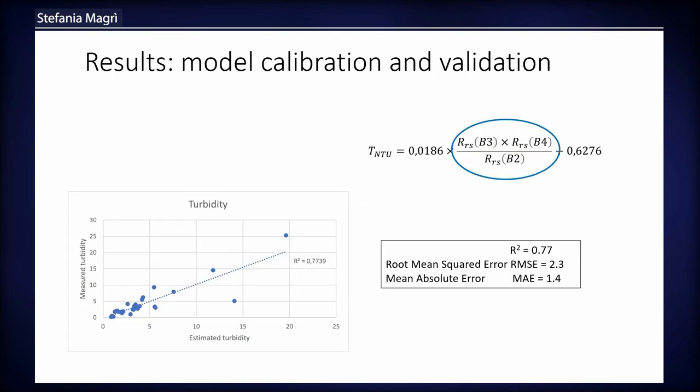The visible range bands were found to be most correlated to turbidity and were combined to identify an index related to turbidity. The correlation is reported here. A validation dataset was used, and R-squared, root-mean-square error, and mean-absolute error were calculated to evaluate accuracy. The correlation found is linear with respect to the index but non-linear with respect to the individual bands.